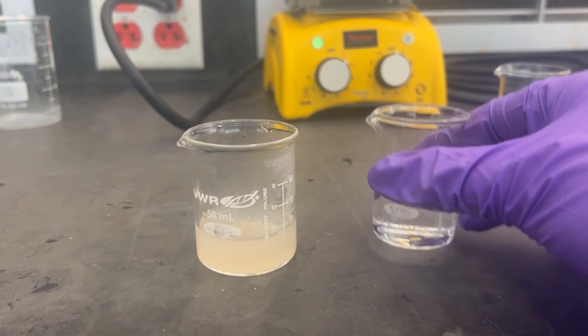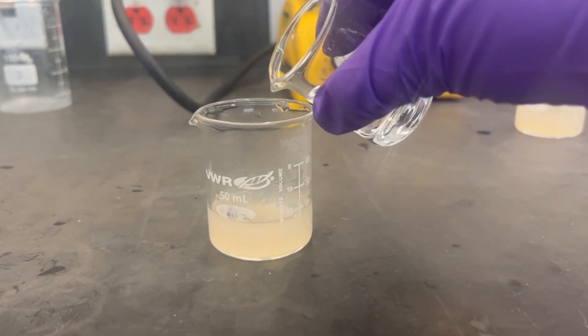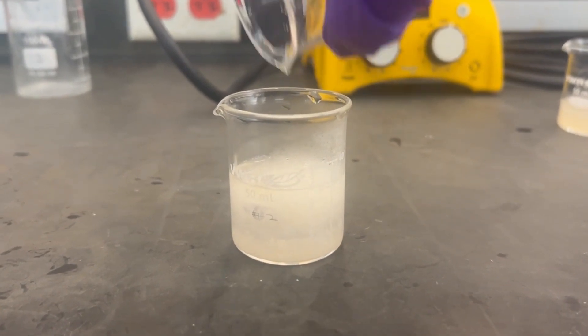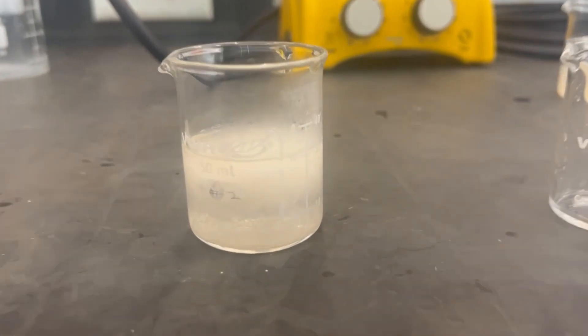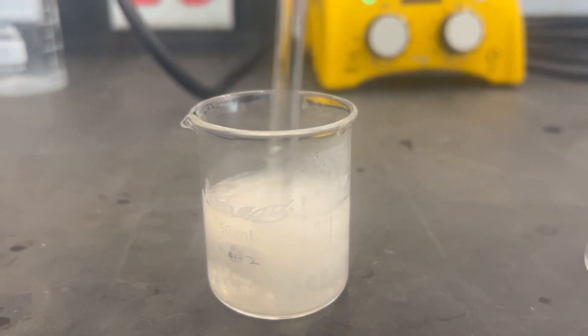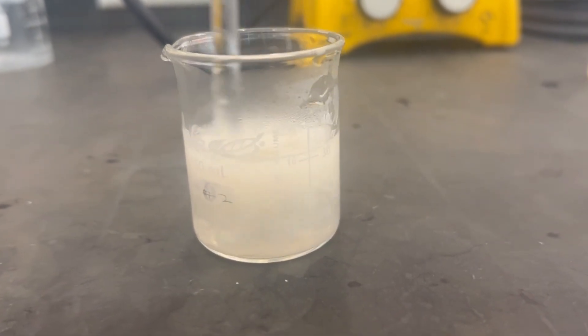To prepare the sodium soap for Part C, add 15 milliliters of saturated sodium chloride solution to one of the 50 milliliter beakers earlier. Stir the solution until a solid appears and floats at the surface of the solution. This solid is the sodium soap.